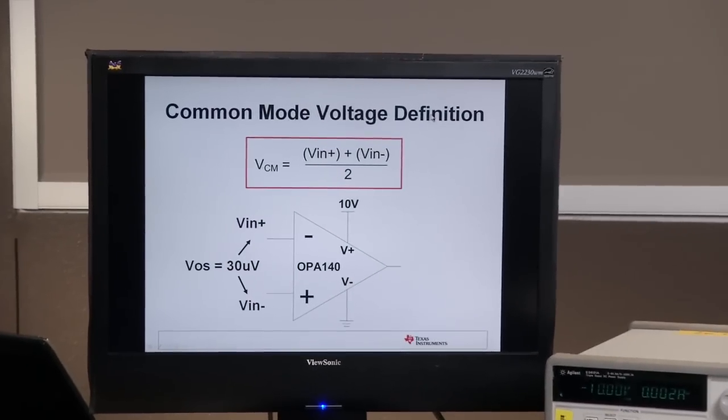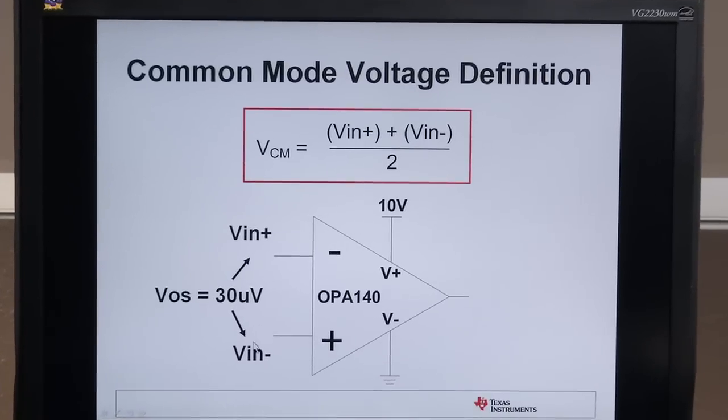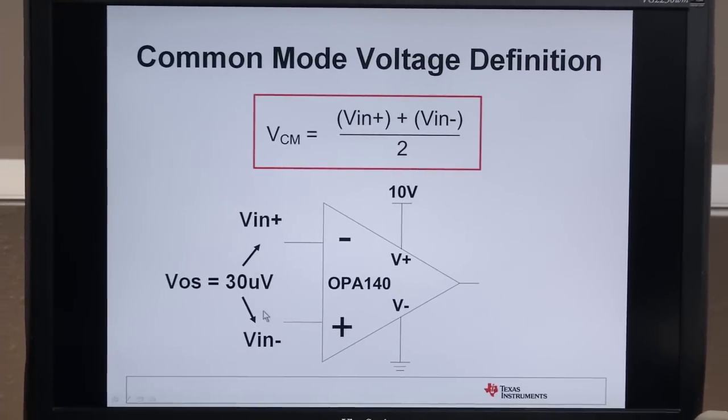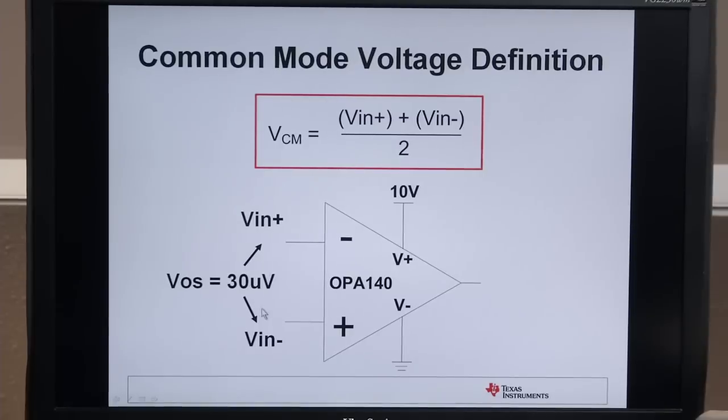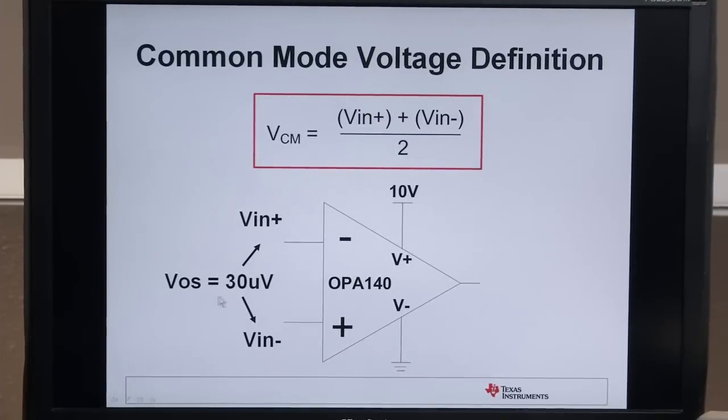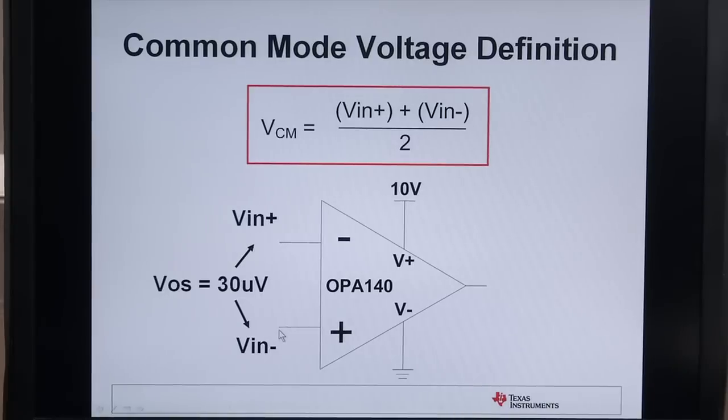This slide shows the common mode voltage definition. Common mode voltage is the average voltage applied to the two inputs of the amplifier. In the case of an op amp, the two inputs are essentially at the same potential with a small offset between the two, so effectively you can see the common mode voltage on either input.